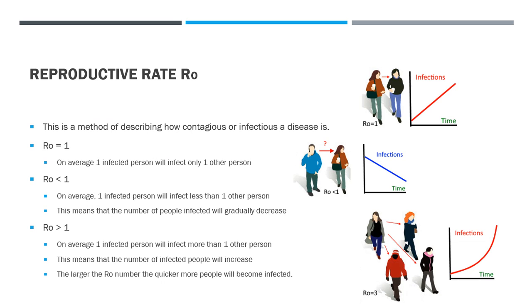We talked briefly about the reproductive rate called R-naught. This is a method of describing how contagious or infectious a disease is. If R-naught equals one, one infected person will infect only one other person, producing a linear increase in infections over time. If R-naught is less than one, one infected person will infect less than one other person, meaning the number of people infected will gradually decrease and the disease will fade away by itself.